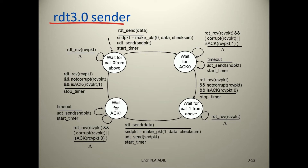RDT 3.0 sender side: it waits for call 0 from above. The action is to make a packet with data and checksum, send it, and start a timer for that packet. Then it waits for the receiver to acknowledge that packet.